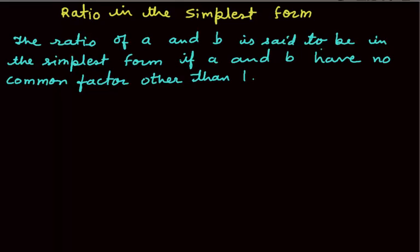Hi, I am Anita. Today I am going to teach you ratio in the simplest form. The ratio of A and B is said to be in the simplest form if A and B have no common factor other than 1.